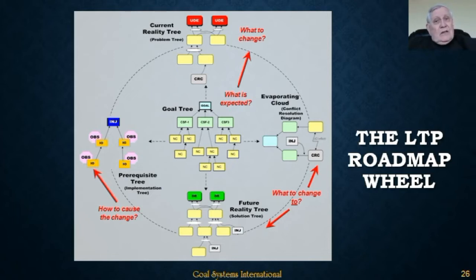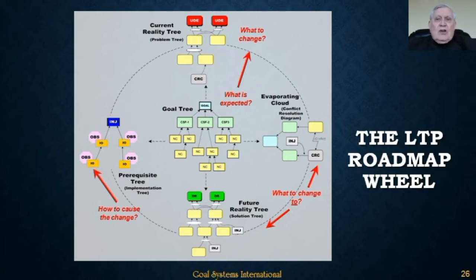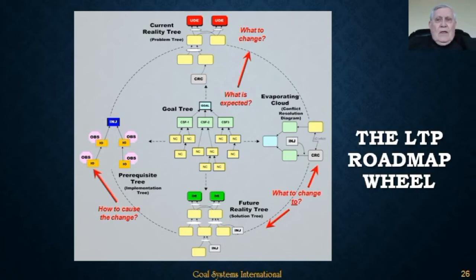Changing anything of significance in a system, even if it will clearly make the system better, attracts varying degrees of resistance — what solves one person's problem can often gore someone else's ox. The Evaporating Cloud is a conflict resolution tool used to resolve people's concerns about change and to overcome their resistance to it. Its output is called an injection — something the system isn't doing now. Those injections, combined with other new policies or practices the system isn't doing now, become the entry point for the Future Reality Tree, or FRT — a tabletop simulation intended to test the effectiveness of the injections at solving the problems defined in the CRT.